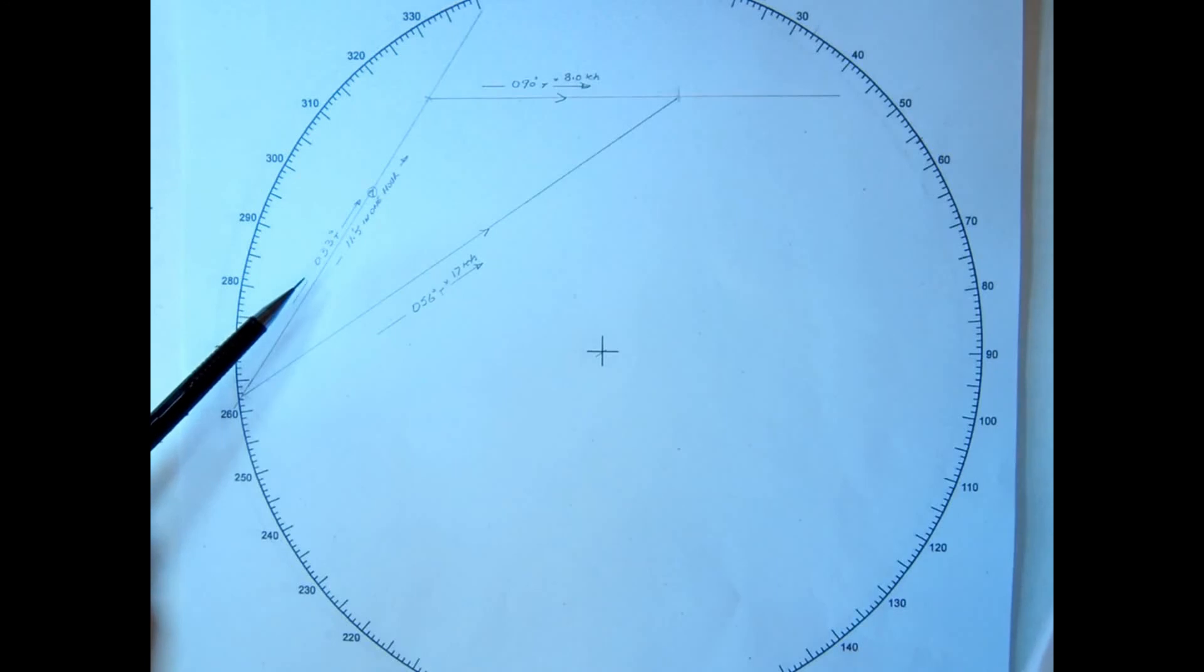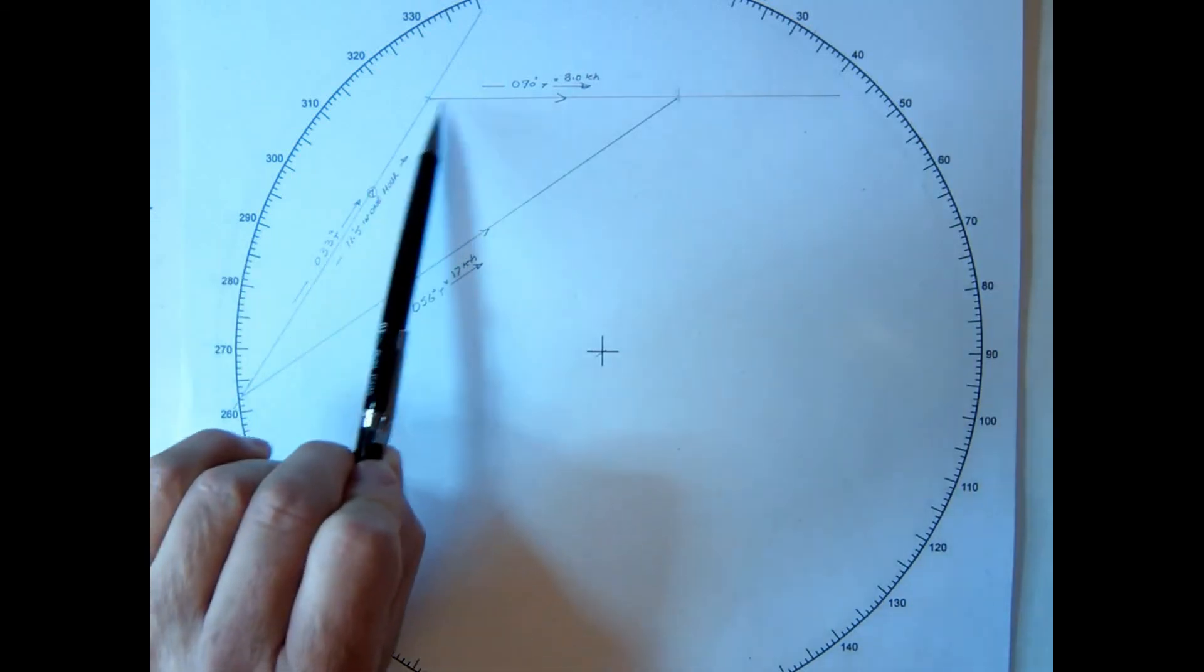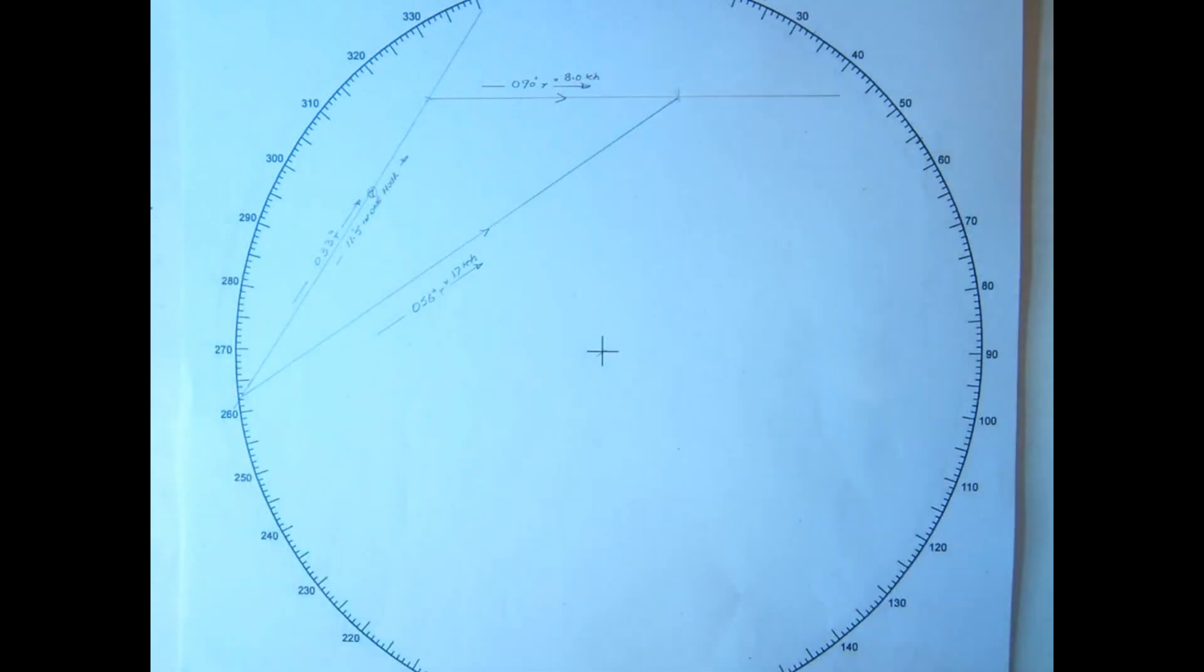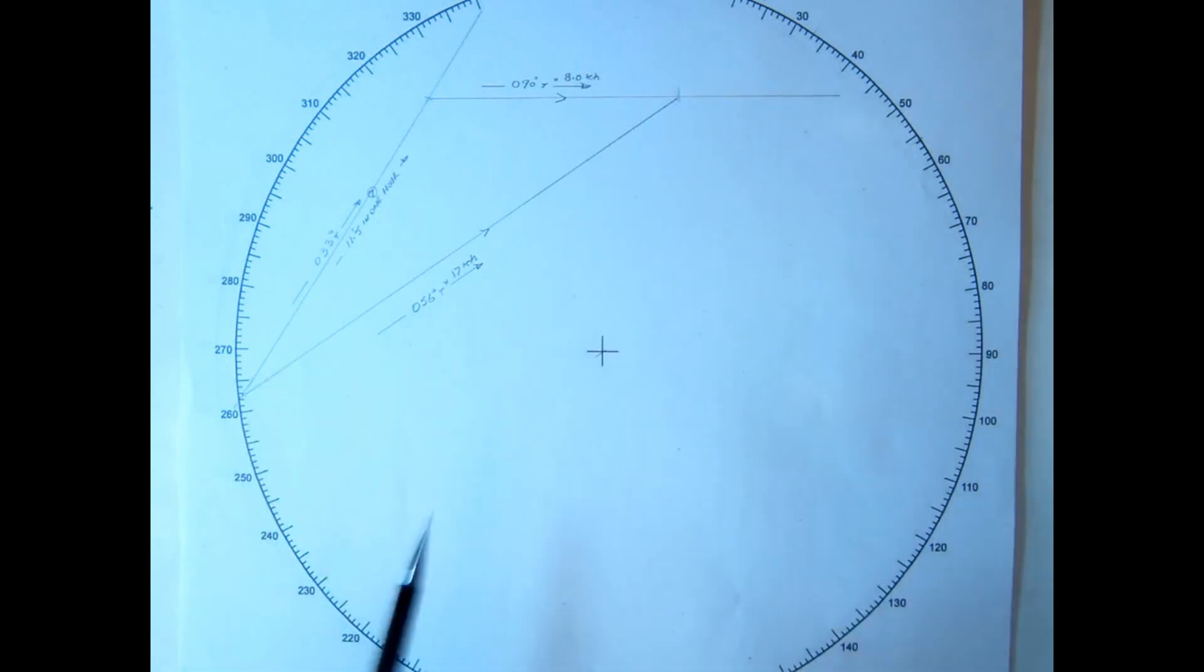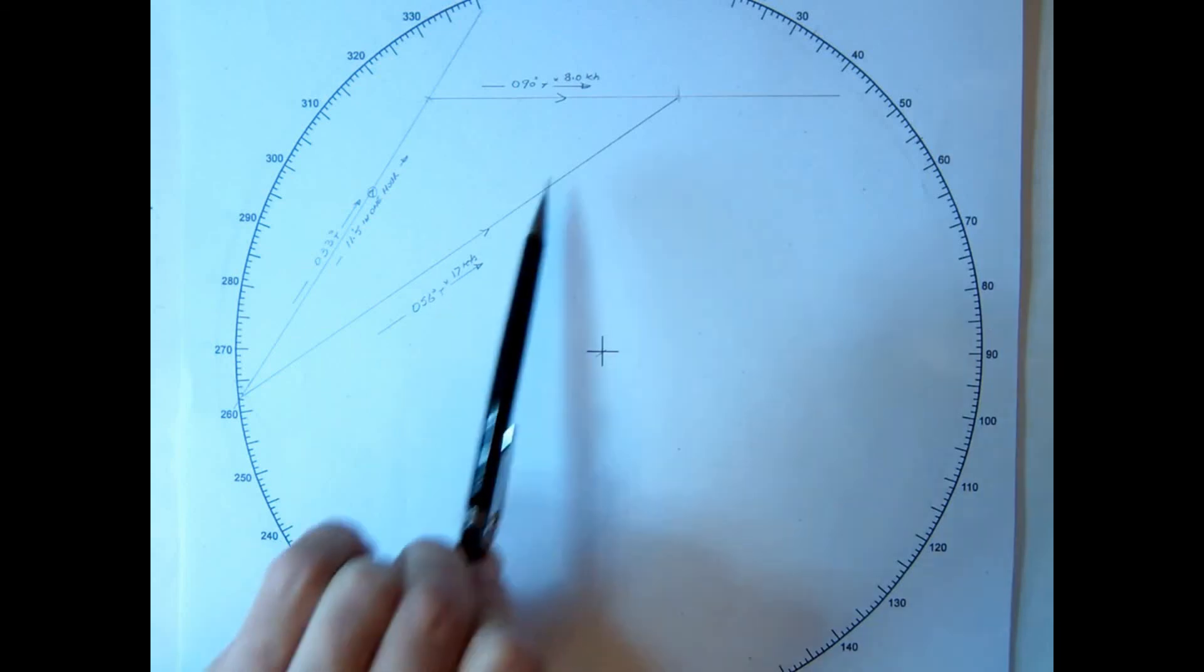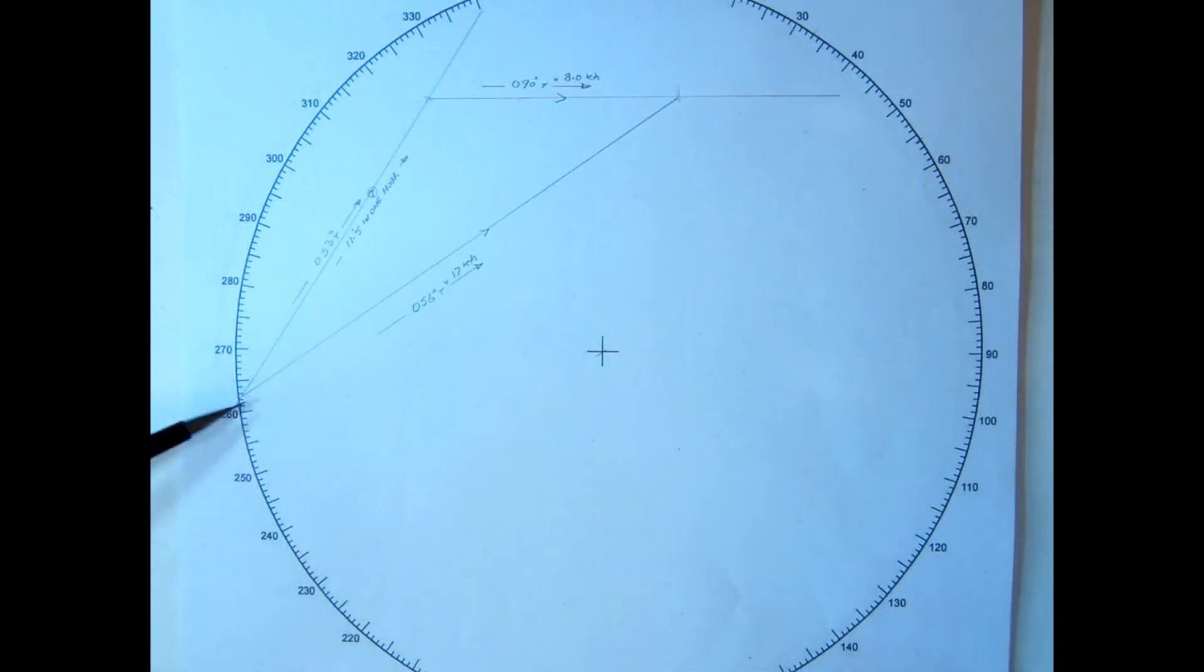You have a vector triangle. You know the bearing, but you don't know the distance initially. Anywhere along there, draw the other vessel's course and speed for an hour. Mark off with your compass our speed for an hour. We can then work out our course, and importantly, complete the vector triangle and work out the distance that will be reduced between our two vessels in a one-hour period.